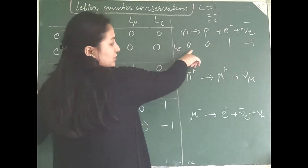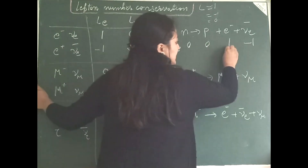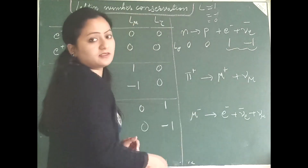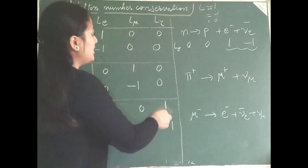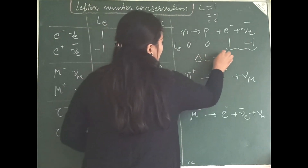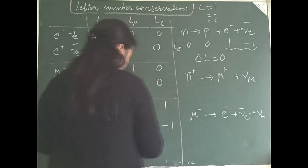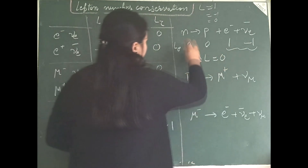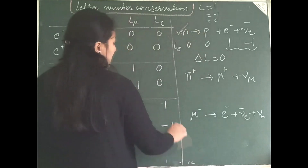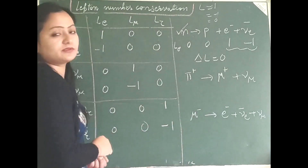This side you have 0, and this side also you have 1 minus 1, which is 0. So delta L equals 0, hence this interaction is allowed.